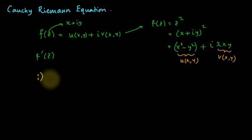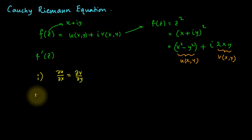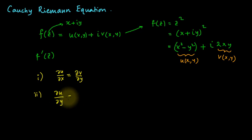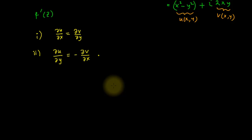If the derivative of this function exists, then two equations must hold: the first is ∂u/∂x = ∂v/∂y, and the second is ∂u/∂y = −∂v/∂x. We will now prove these two equations in a graphical way.